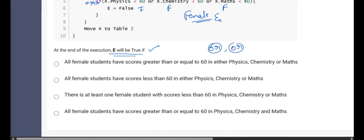So here the most accurate answer will be greater than or equal to 60 in either physics, chemistry or maths. If you see here in either physics, chemistry or maths, that means there is a great probability that one can remain to be false and others are true greater than or equal to 60. All female students have scores less than 60, this is not what we want, right? This is not the correct answer.